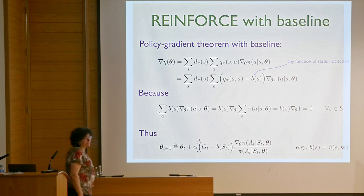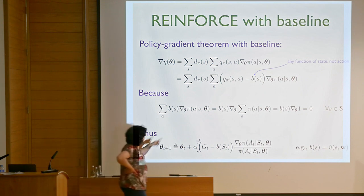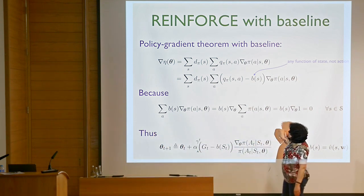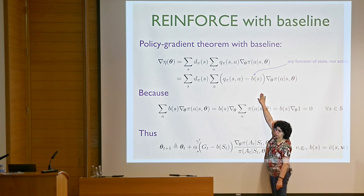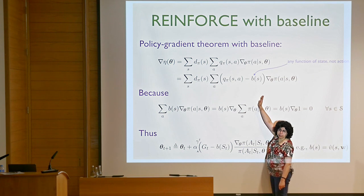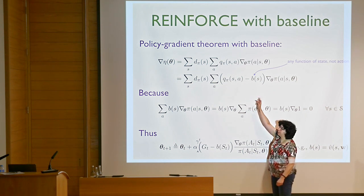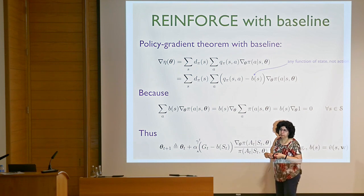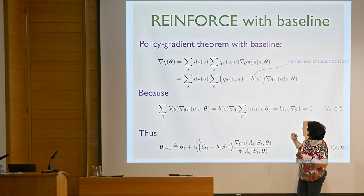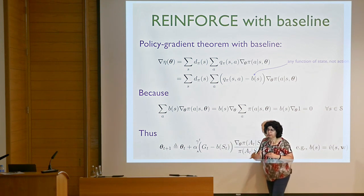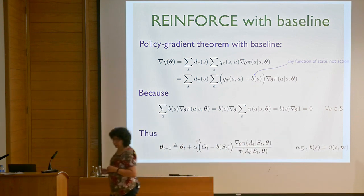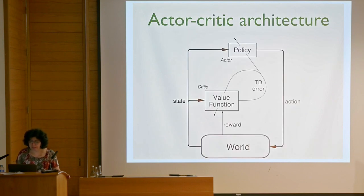Because of the horrible variance, you usually want to reduce it, and we often borrow tricks from statistics. In particular, we use baselines. If you inspect the formula, you can subtract anything constant with respect to actions that only depends on the state—when you take the gradient, that term will be zero, so you won't perturb the gradient value but you might reduce variance. A very common baseline is the value function of the state, which is just a variance reduction trick.